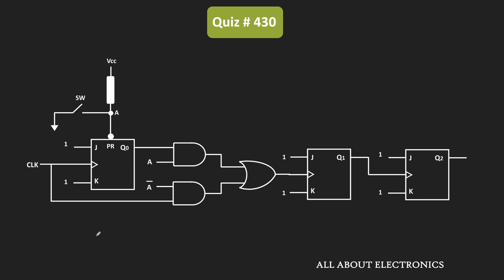So initially, this switch is in the open condition. In this condition, this supply voltage is connected to this preset input. And as you can see, this preset input is the active low, meaning that when this input is high, then it will not affect the regular function of this flip-flop. And whenever it becomes low, then irrespective of the inputs of the flip-flop, the output of this JK flip-flop will become 1. So when this switch is in the open condition, this point is connected to the VCC, or we can say that input A is equal to 1, and the preset input will also get disabled.